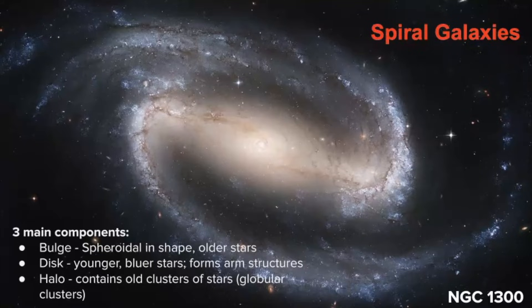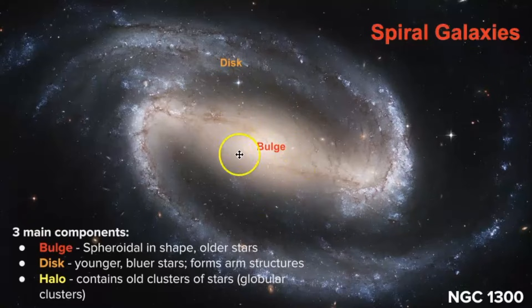When we look at these three main components, we have the bulge which is the center of the galaxy, there's the disc which are the arms of the galaxy, and then there is the halo. The halo contains older stars, the disc has younger bluer stars, while the center of the galaxy typically has older stars.